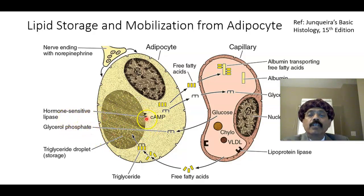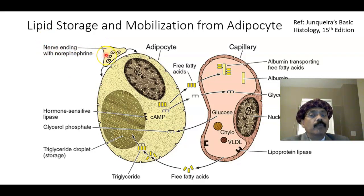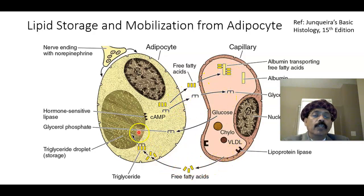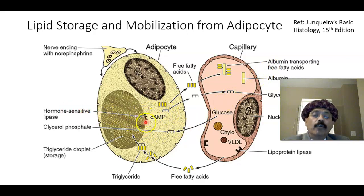There is also a hormone-sensitive lipase in the adipocyte. Hormones such as growth hormone, corticosteroid, and norepinephrine from the adrenal medulla activate cyclic AMP, causing the release of glycerol and free fatty acids. The glycerol, being water-soluble, is taken up by the liver, and free fatty acids are mobilized into the body circulation. Insulin, however, inhibits the release of free fatty acids and glycerol.